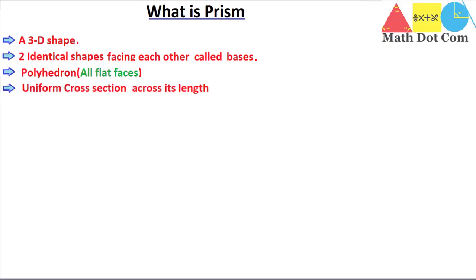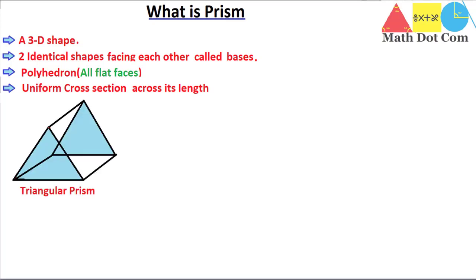The fourth property is a uniform cross-section across its length. This means that whenever you take a cross-section view of the prism, it should be the same no matter where you take it. Let's draw the shape of the prism. This is the shape of a prism that we most commonly come across in our labs and daily life, but this is not the only shape of the prism.